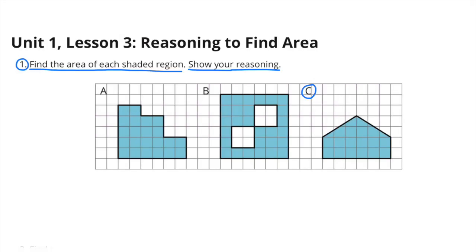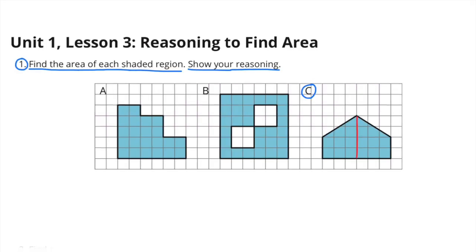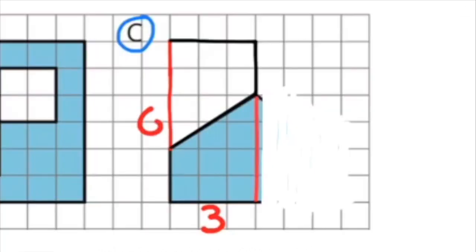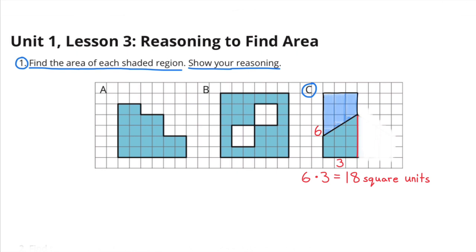C. Draw a line down the middle of this symmetrical shape and you'll notice two identical shapes. If you stack this shape on the right on top of the shape on the left, you'll have a rectangle. The dimensions would be 6 units for the height and 3 units for the width. The area for C is 18 square units.